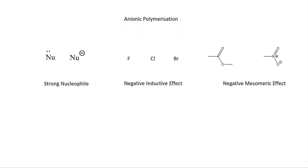For anionic polymerization to occur, a nucleophile has to attack a carbon-carbon double bond. In order for the reaction to take place, the nucleophile has to be very strong, and there has to be an electron withdrawing group bonded to the carbon of the double bond. Electron withdrawing groups can be either those with minus I inductive effects — usually electronegative atoms — or alternatively, they can have minus M mesomeric effects, such as nitro groups and ester linkages.